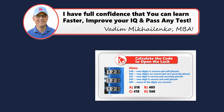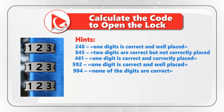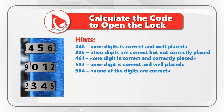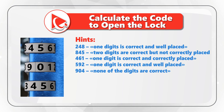Here is a challenging problem — by solving it you will boost your cognitive abilities. You are presented with five hints, and using these hints you need to unlock the code and open the lock. The hints are: in digits 248, only one digit is correct and well placed. In digits 845, two digits are correct but not correctly placed. In digits 461, only one digit is correct and it is correctly placed. In digits 592, only one digit is correct and it is well placed. And in digits 904, none of the digits are correct.